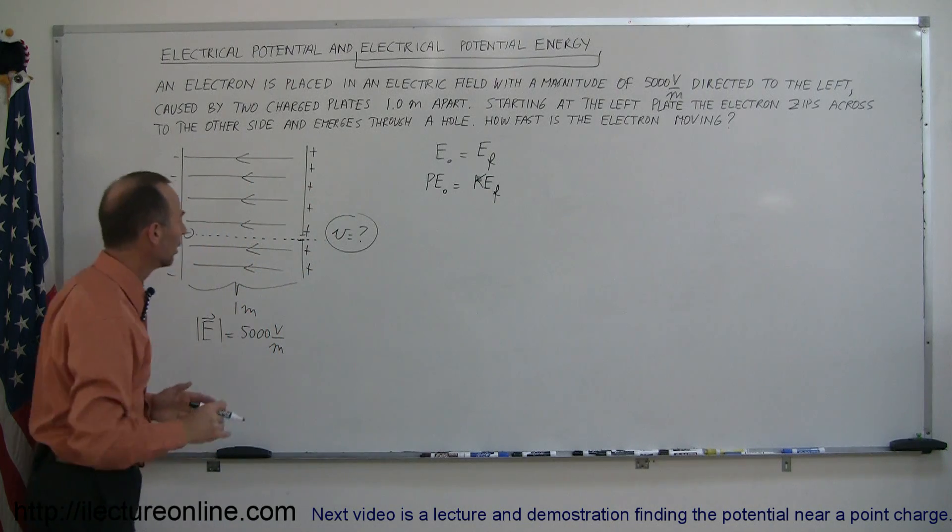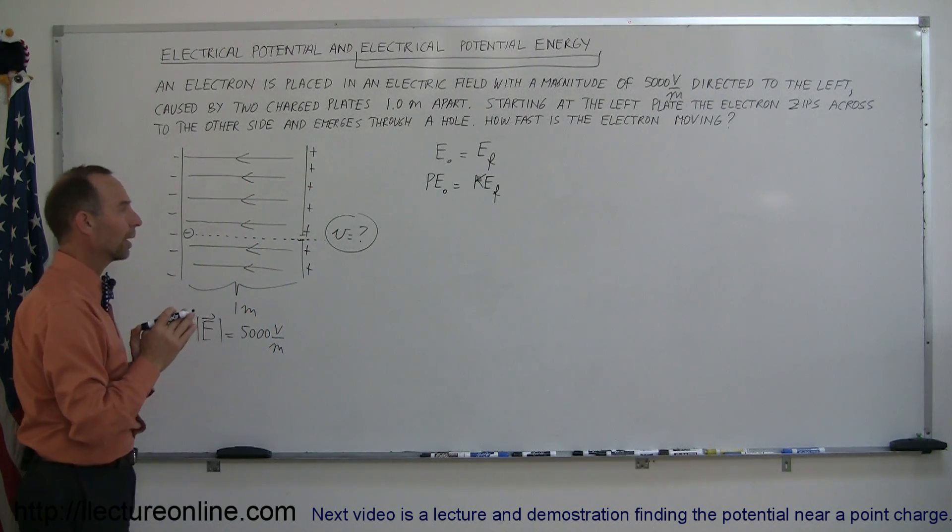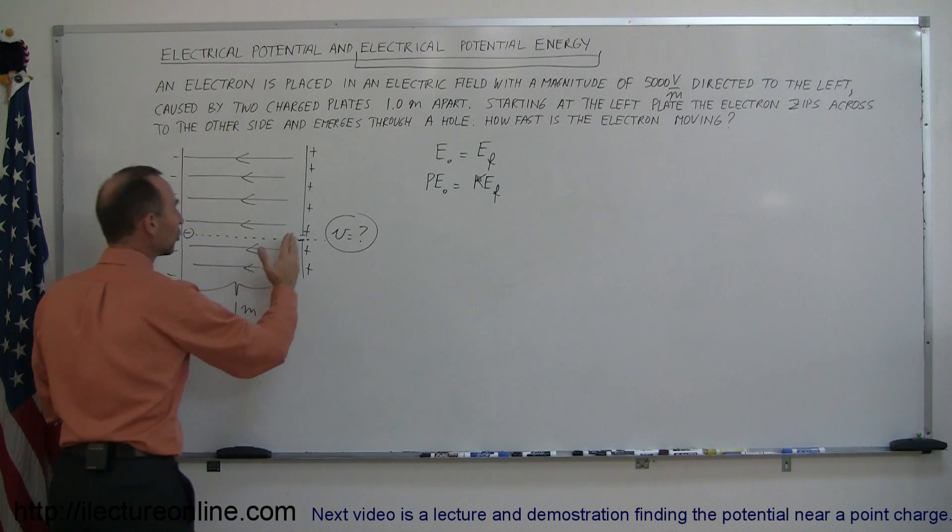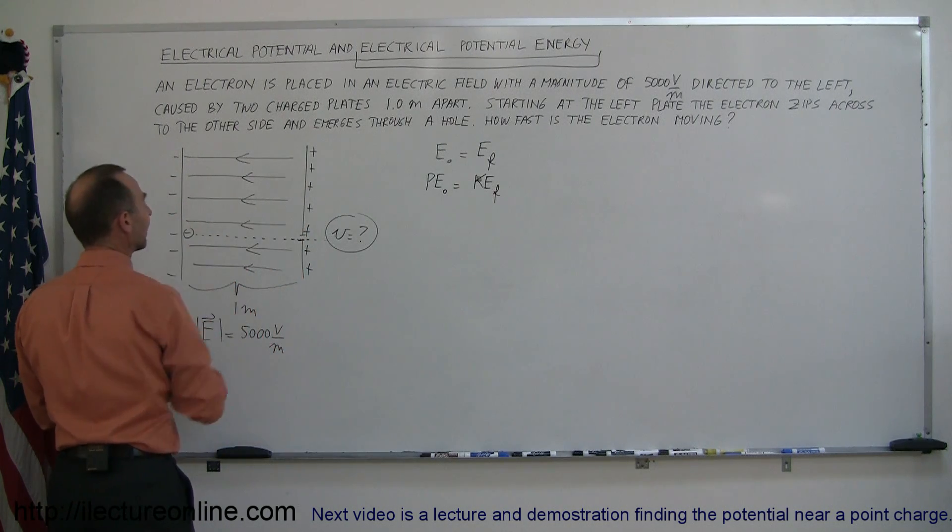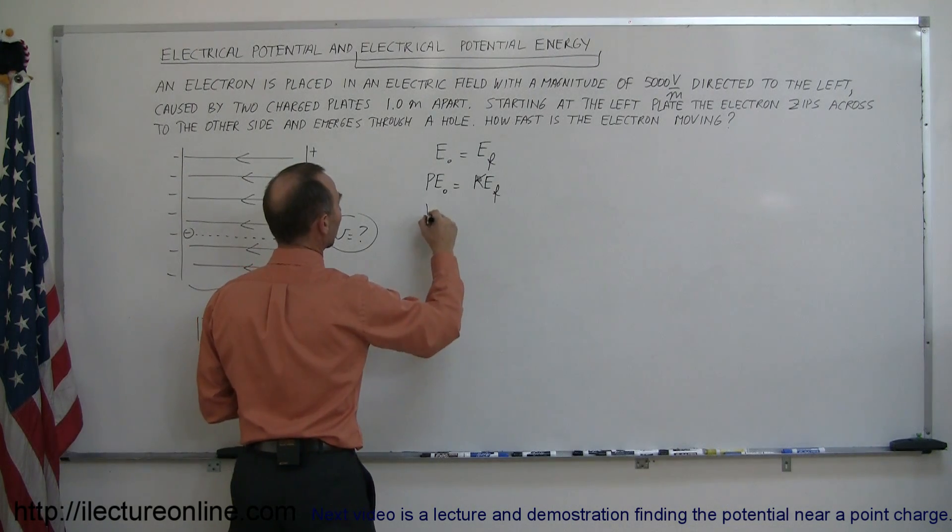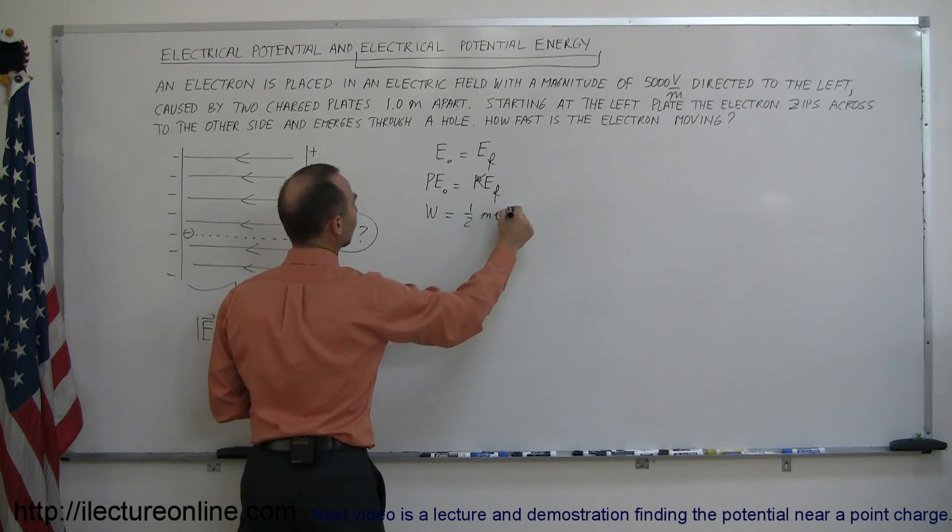So how much potential energy does the electron have? Well it has the same amount of potential energy as if you pushed it all the way across and it would then equal the work done to get it there. So that's equal to the work done to get it there and the kinetic energy then would be one-half mv squared.